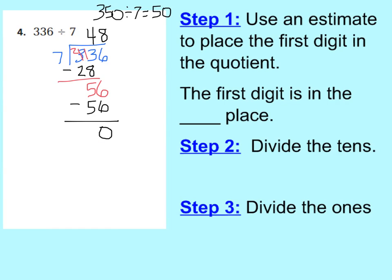Now our essential question is to check your work. To check your work, you want to multiply your quotient times your divisor, and that will give you your dividend — my 336 that we started with. Let's check it together. Do 48 times 7. 7 times 8 is 56, so carry my 5 tens, drop my 6 ones. Now multiply my tens: 7 times 4 tens is 28 tens, plus 5 more is 33 tens. So I have 336. That's exactly what we started out with, so we are correct.